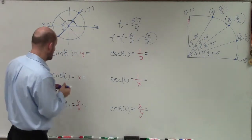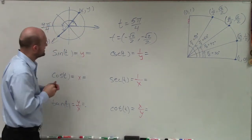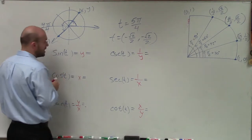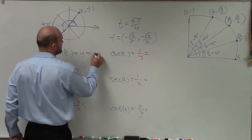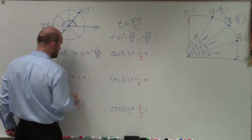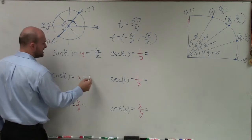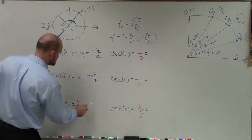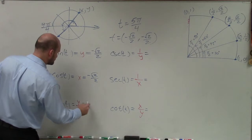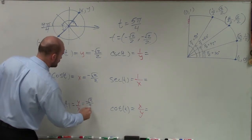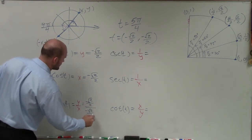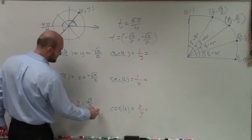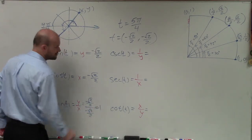Now let's evaluate the six trig functions. The sine of our angle equals the y coordinate, so that's negative √2/2. The cosine is the x coordinate, so that's negative √2/2. Tangent is the y coordinate over the x coordinate — they're both the same value and the negatives cancel, so we're left with positive 1.